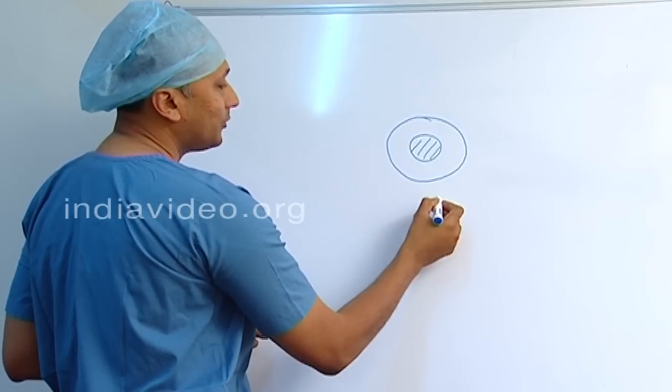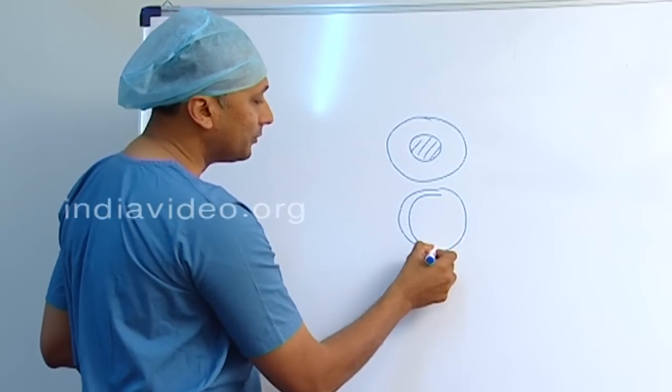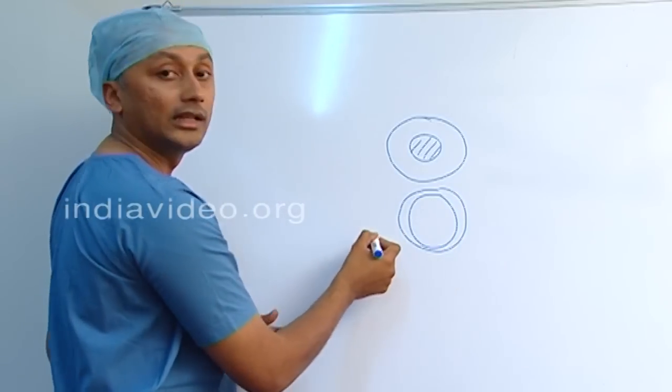To get this lens out, what we do is we dilate the pupil with medications, so it becomes big and we can take out the cataract.